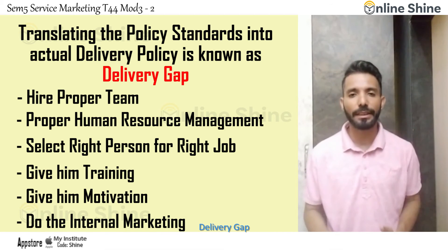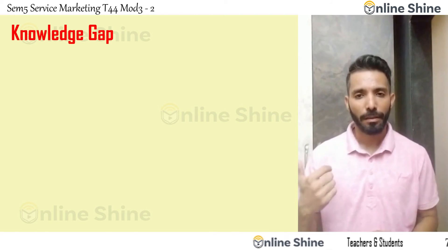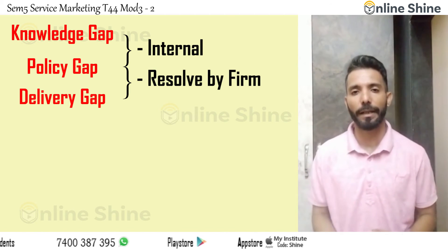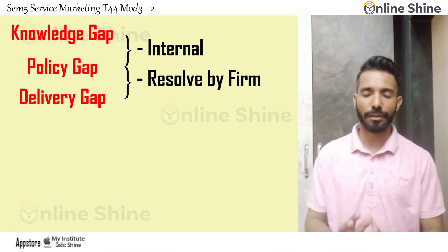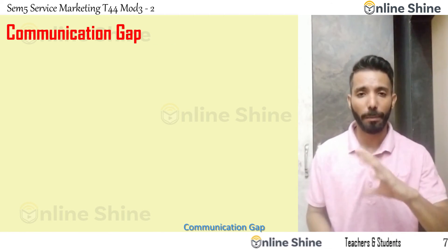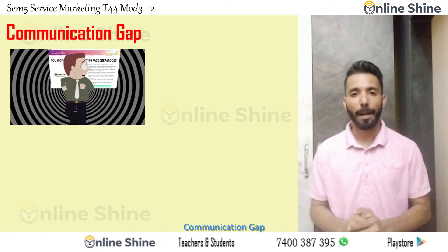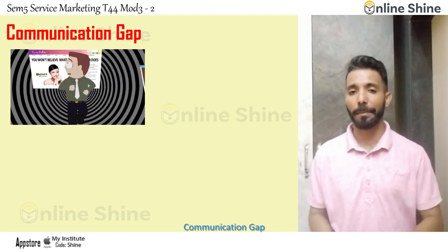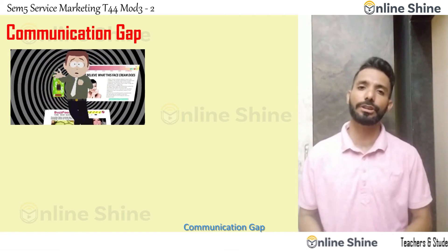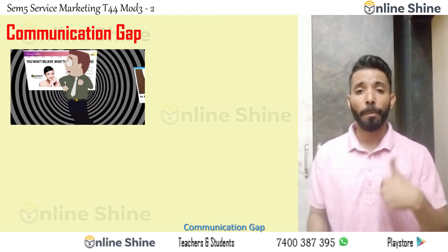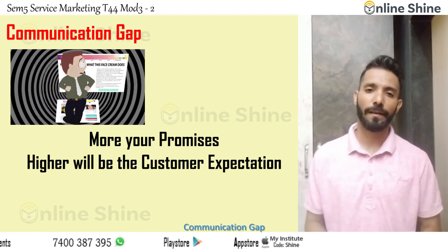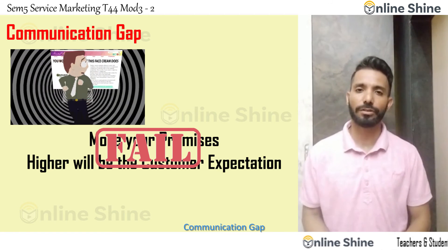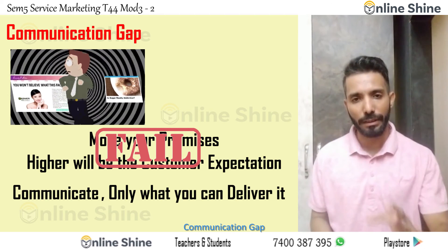The fourth gap is the communication gap. The first three gaps — knowledge gap, policy gap, and delivery gap — are internal and can be resolved by the firm. But the communication gap is somewhat external. It is all about your advertising: what promise are you making in your advertising? Whatever you are promising, if you are not able to deliver it, that is the communication gap. Whatever you communicate through your promotion mix, the customer will build expectations from it. The more you promise, the higher the customer expectations. If you fail to deliver, that is a communication gap. The only way to solve this is to communicate only what you can actually deliver.